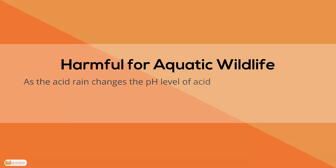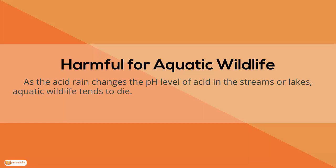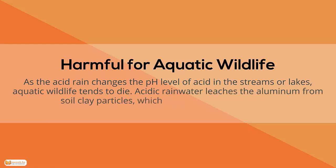Effects on aquatic wildlife. As acid rain changes the pH level in streams or lakes, aquatic wildlife tends to die. Acidic rainwater leaches clay particles from the soil, which then flow into the stream.